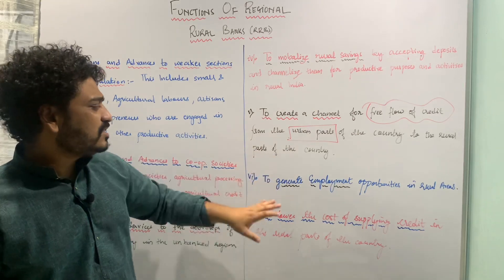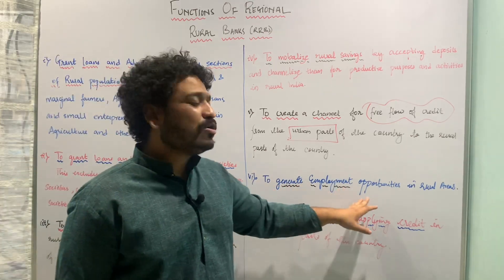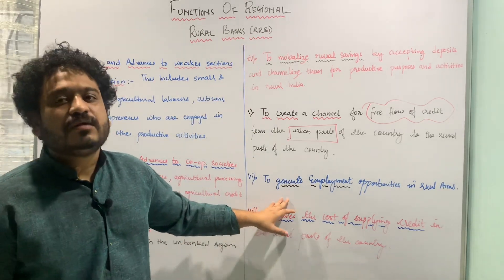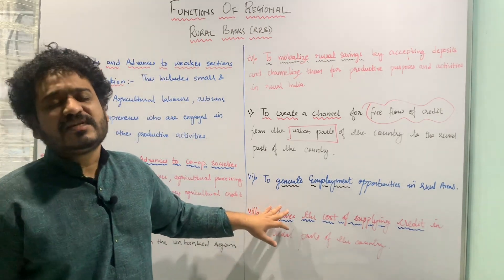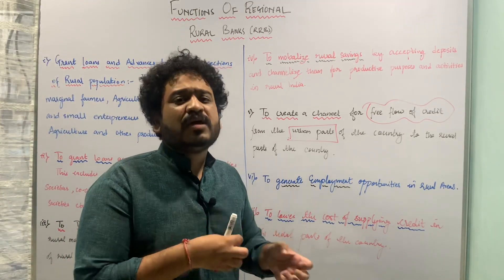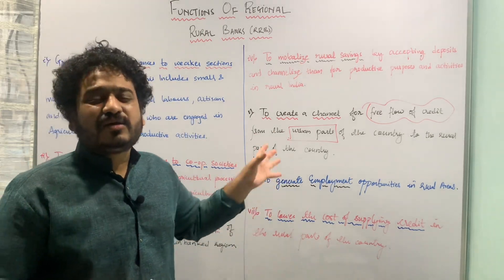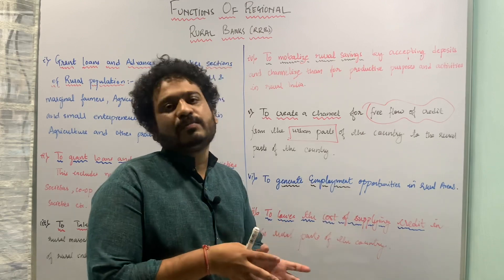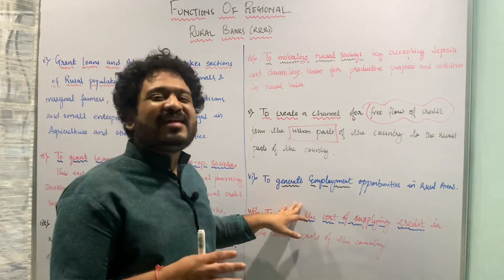The next function is to generate employment opportunities in rural areas. Regional rural banks help generate employment both directly and indirectly. Directly, the bank itself will employ educated youth. Indirectly, the bank will provide funds or credit to institutions already operating in rural parts, enabling them to expand their business and therefore employ more individuals from the rural parts of the country.